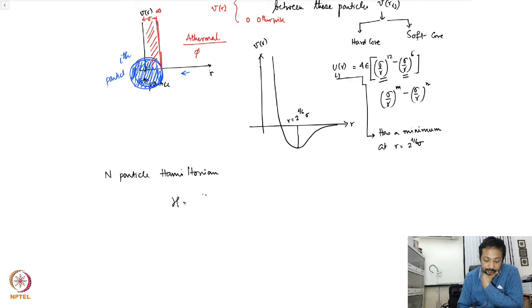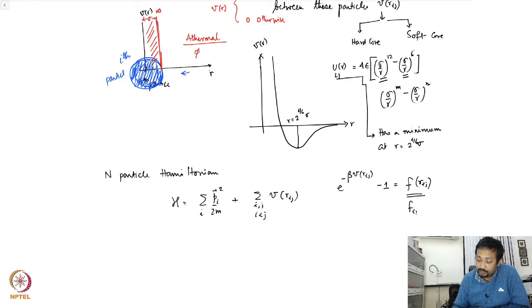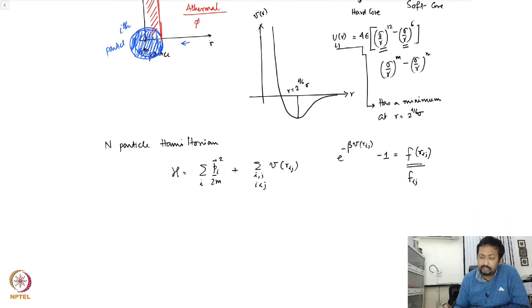Which is given by sum over i p_i square over 2m plus sum over i, j with i less than j, this is the interaction and we will call this as V of r_ij. Before we go further we define a function e to the power minus beta V(r_ij) minus 1 as f of r_ij. The alternative notation that we are often going to use is instead of f of r_ij we will write them as f of ij.